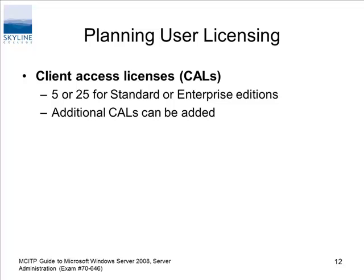Client Access Licenses (CALs) — 5 to 25 for standard and enterprise editions. Additional CALs can be added. When you install, the default is five. Microsoft doesn't count very well, but if they ever come to check you they'll count real well. Educational licensing is different — the company buys licenses based on the number of students we have, so we basically get free run of the resources. In business it's not going to be that way. If you need to add access licenses, just go in and add the CALs once you buy them.